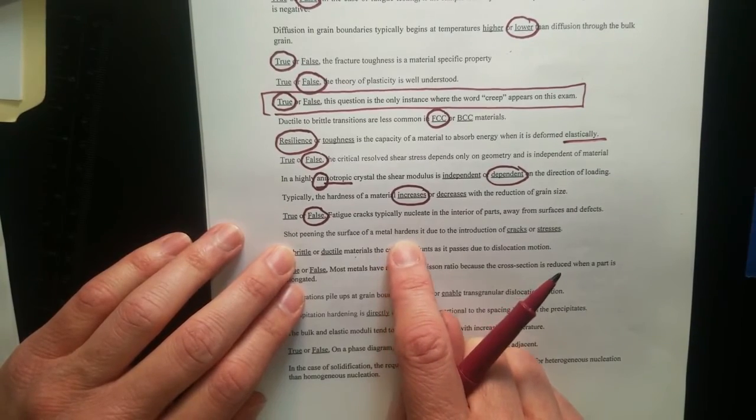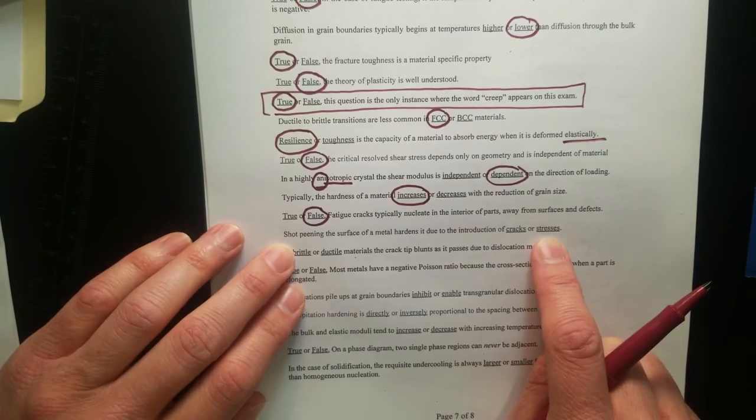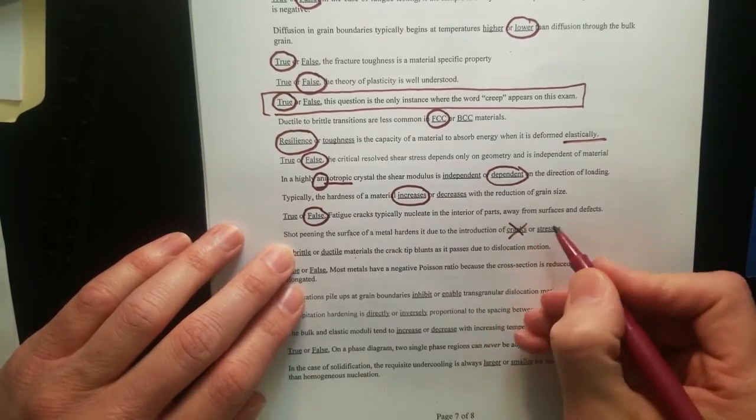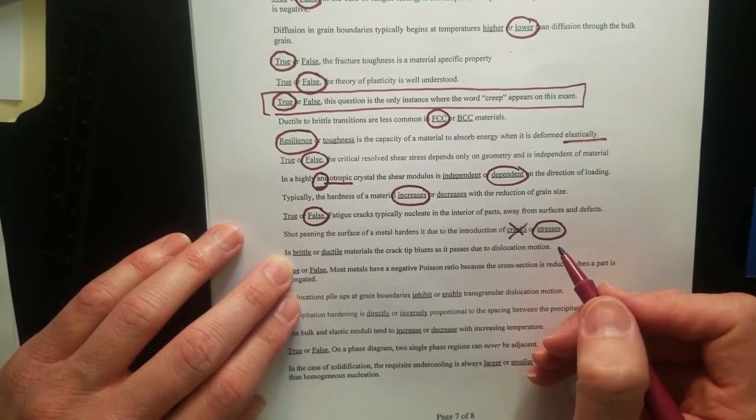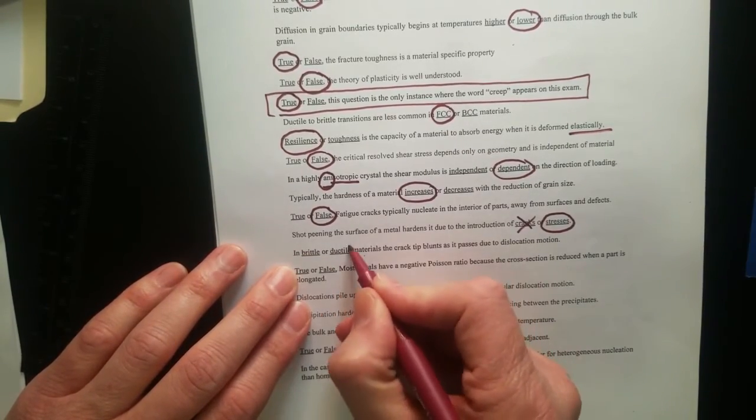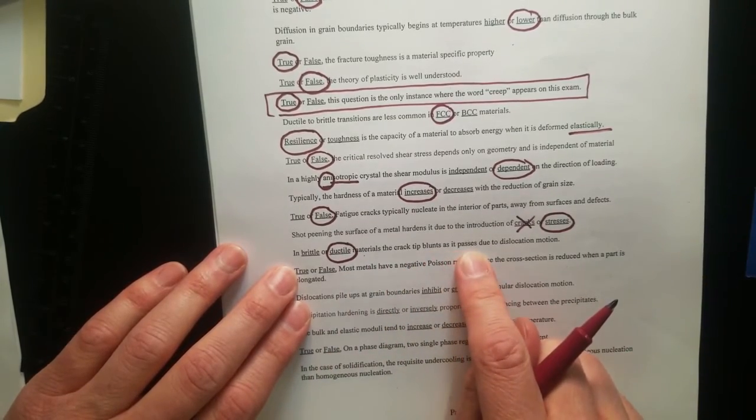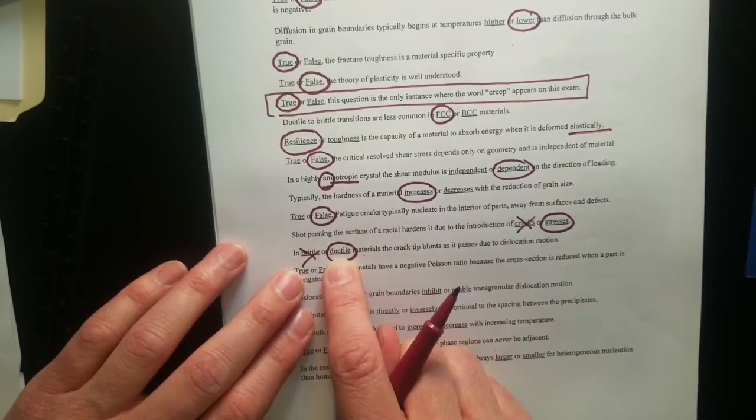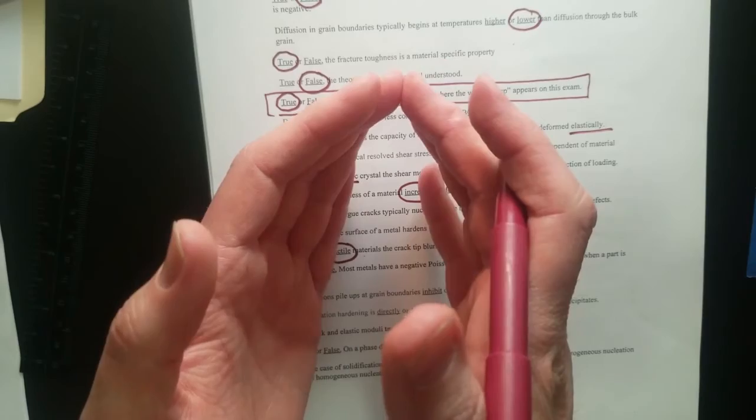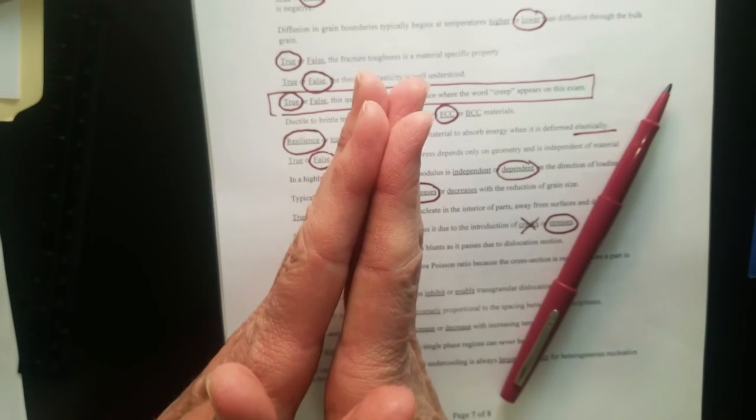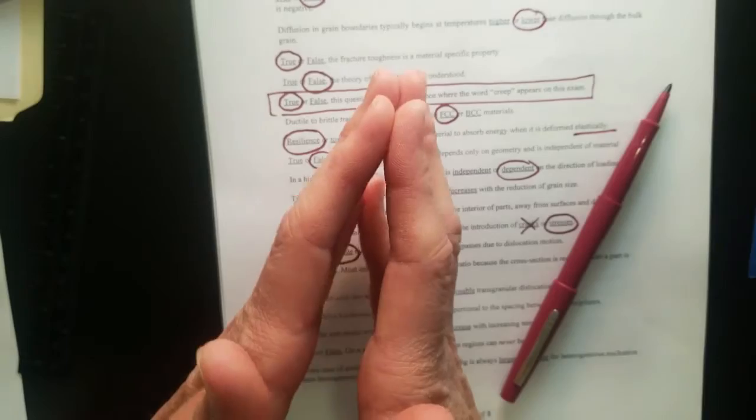Shopping the surface metal hardens it due to the introduction of cracks or stresses. Well, can you ever imagine adding cracks in order to increase the hardness? No. It introduces stresses. The stresses are compressive in nature and blunt crack tips. In ductile materials, crack tips blunt as they pass through due to dislocation motion. You can think, are there dislocations in brittle materials? No. So that's out. But you can also think that in ductile materials, that's where you have dislocations. As a crack is propagating, you're going to see the crack tip opening up and rounding out. We know that the stress concentrator effect depends on the radius of curvature of a crack tip. A very fine crack has a much stronger stress amplitude than a rounded one.